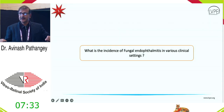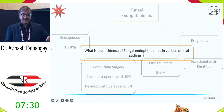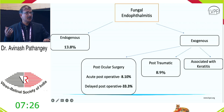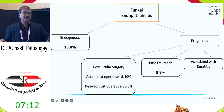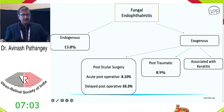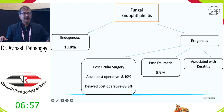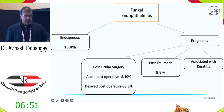Looking into the landscape of fungal endophthalmitis, we start with understanding the numbers: what is the incidence in the Indian subcontinent? Most of the data are from the Indian subcontinent, not the West. We have both exogenous and endogenous forms, and endogenous is more common than exogenous. For ease of remembering, endogenous is around 12 to 15 percent; in exogenous — acute post-operative and post-trauma — it's somewhere between 8 to 10 percent. The major chunk is delayed post-operative, at nearly 33 percent.